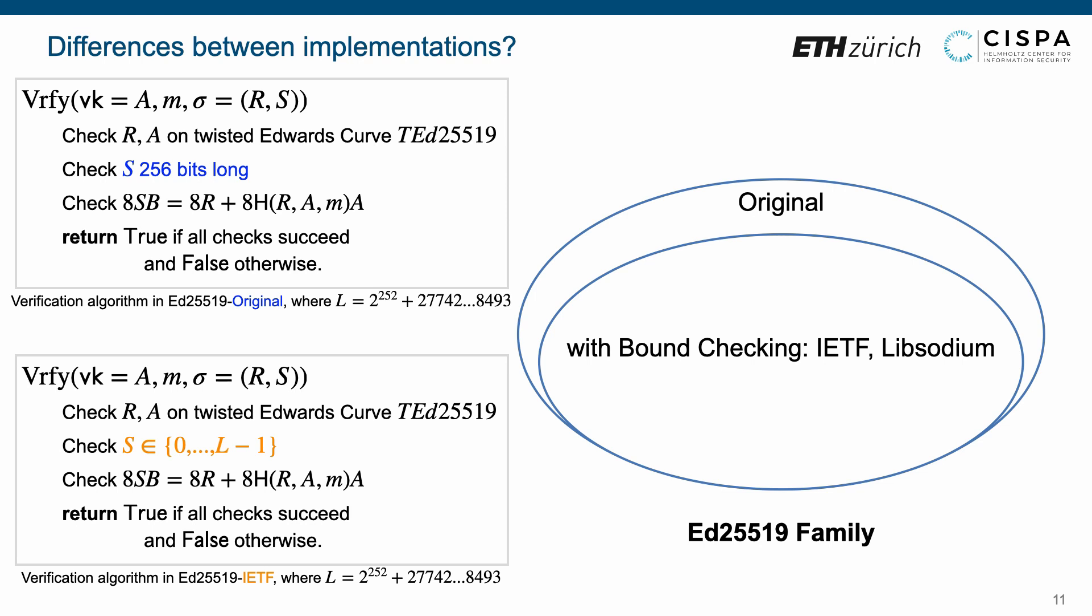Hence, we can observe that ED25519 original differs from IETF and Libsodium versions in bound checking, while the original version checks whether S is 256 bits long. The IETF and Libsodium versions check whether S is in the range from 0 to L-1. The relation between these three variants is depicted in the Venn diagram.